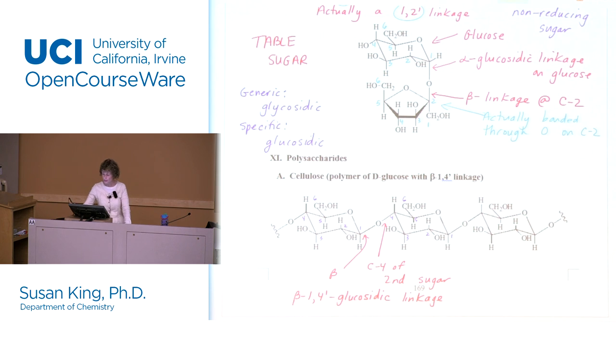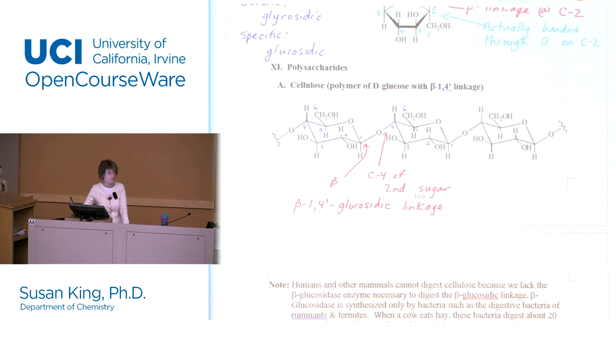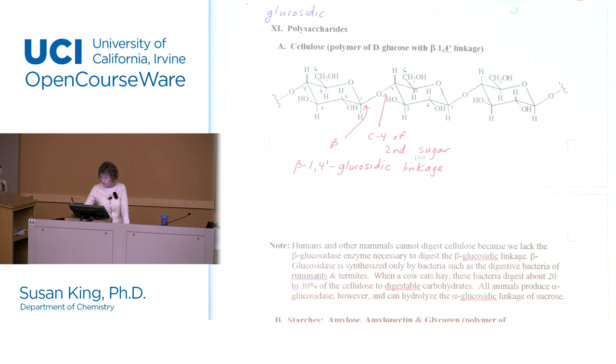We don't have the capability of digesting cellulose. Humans and other mammals can't digest cellulose because we don't have the beta glucosidase enzyme that you need to do this. It's very difficult to digest. Beta glucosidase is synthesized only by bacteria such as the digestive bacteria of ruminants and termites so like cows. When cows eat hay they have bacteria in their stomach that make this enzyme so they can break apart the cellulose bonding. Even so it's even still very hard for them because they regurgitate and then swallow back again. Even then they're only digesting about 30% of it. That's why cow droppings look like grass because that's all the undigested grass in there.